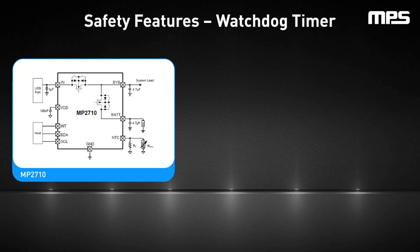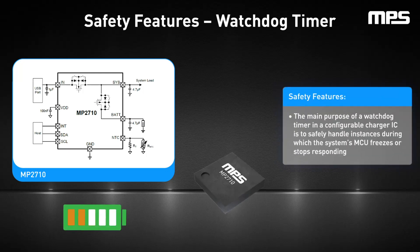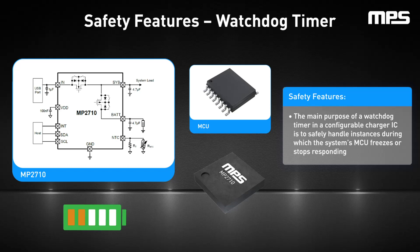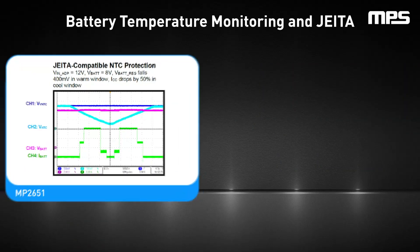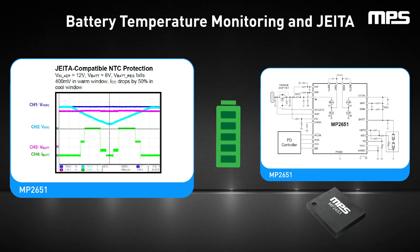In addition to determining the ideal battery charger topology, designers must also consider a device's safety features and how those features are relevant to the overall solution. A watchdog timer ensures that the charger operates within safe parameters, resetting the system if any anomaly is detected. The main purpose of a watchdog timer in a configurable charger IC is to safely handle instances during which the system's MCU freezes or stops responding. If the MCU begins acting erratically or stops functioning altogether, it can potentially cause incorrect values to be written to the charger IC, which could affect battery safety during charging. Equally important is battery temperature monitoring. A critical safety requirement for a charger IC is the ability to monitor the battery's temperature during charging and control the charge current and/or voltage when the temperature is outside of a specified range. Adhering to JEITA standards, chargers can adjust charging profiles based on battery temperature, ensuring optimal safety and longevity.